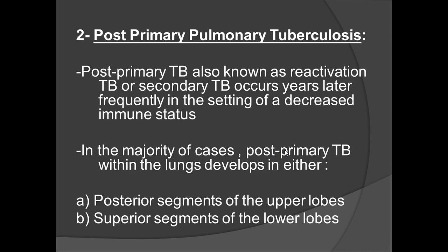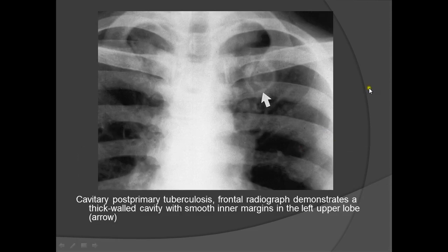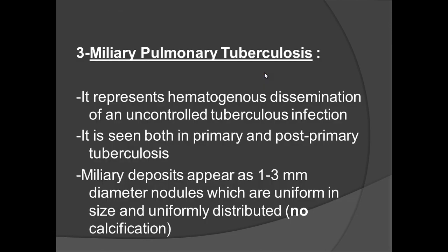Post-primary TB: the hallmark is cavitation, with a tendency for oxygen-rich areas such as the posterior segment of the upper lobe and the superior segment of the lower lobe. Typical appearance includes patchy consolidation, linear and nodular opacities, and cavitation in 40% of cases with endobronchial spread showing a tree-in-bud configuration on CT. A granuloma in the left upper lobe with internal cavitation is the hallmark of post-primary TB.